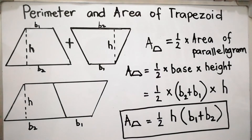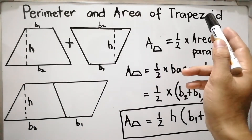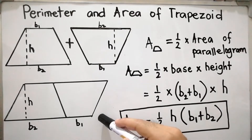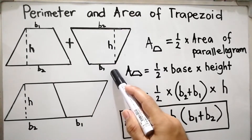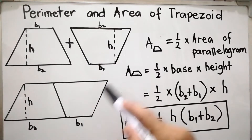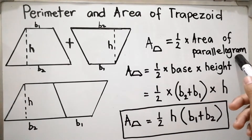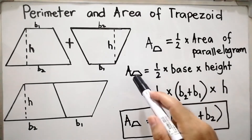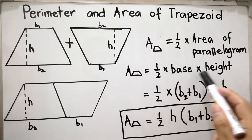Without further ado, let's start. How do we derive the formula for the area of a trapezoid? It was derived from the formula of the parallelogram. As you can see, once we combine two congruent trapezoids, it will form a parallelogram. So the area of a trapezoid is half the area of a parallelogram. Since the area of a parallelogram is base times height, the area of a trapezoid is equal to one-half times base times height.